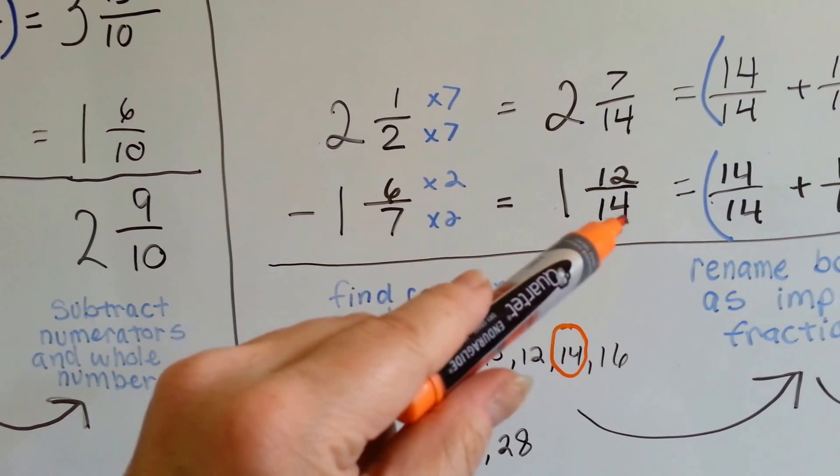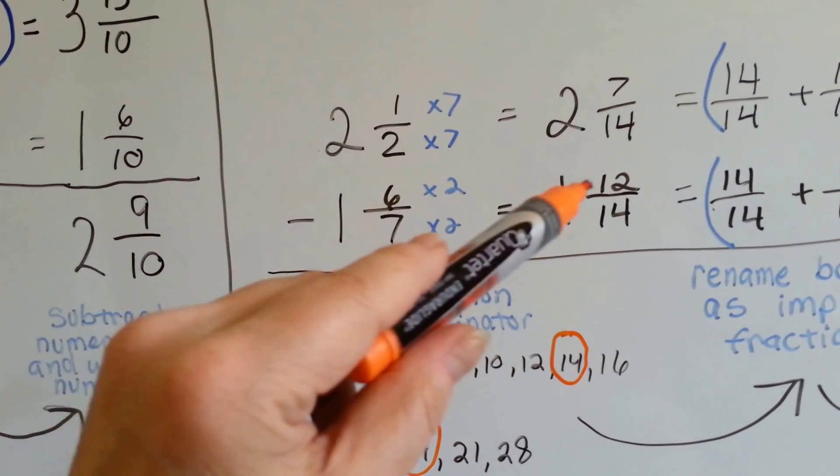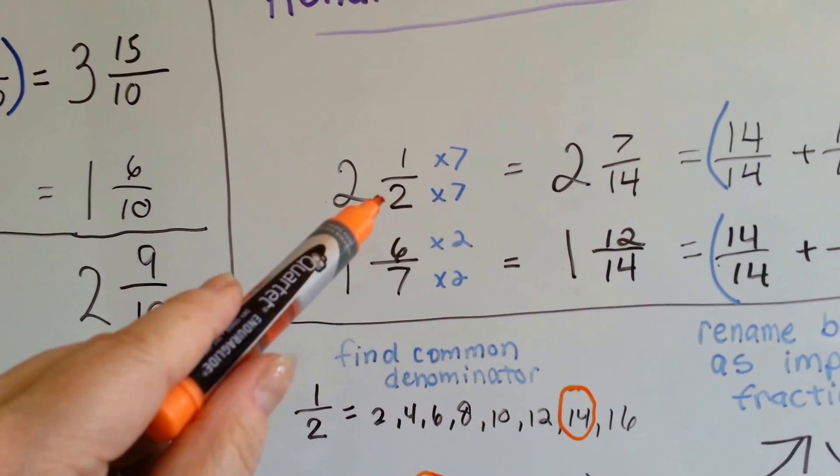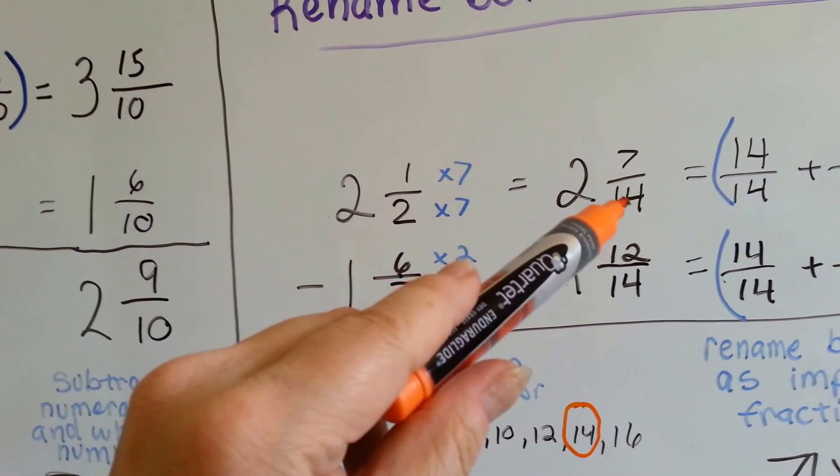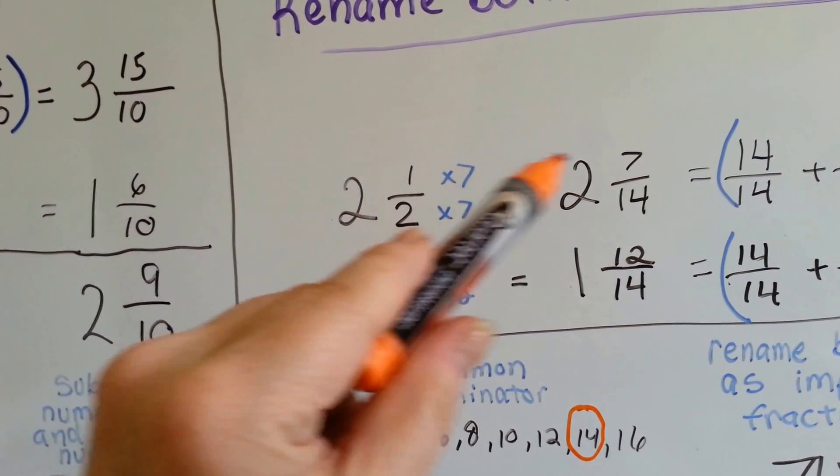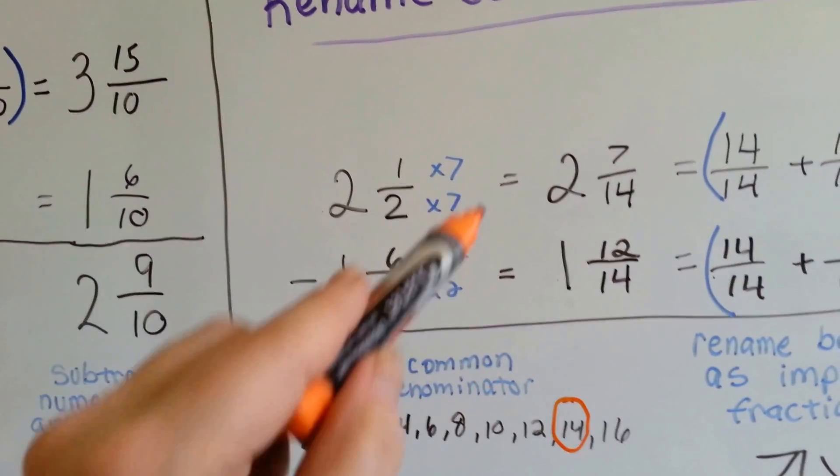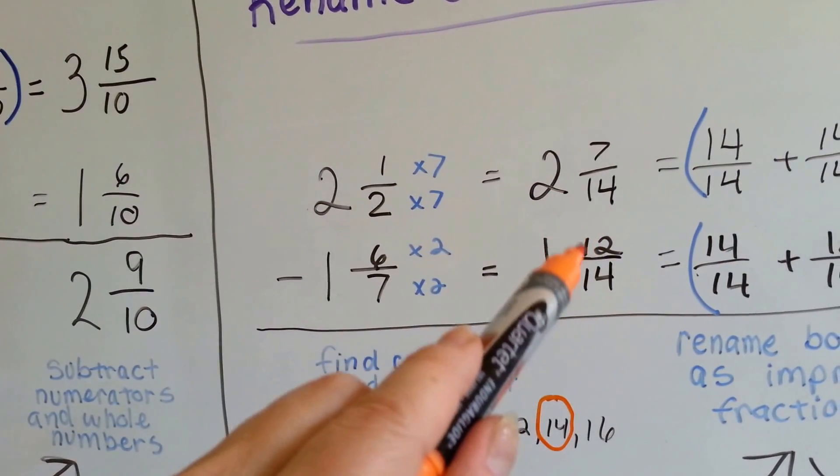7 needs to be multiplied by 2 to become 14. 6 is jealous, he gets multiplied by 2. 2 needs to be multiplied by 7 to become 14. 1 is jealous, it gets 7 also. So now we've got 2 and 7 fourteenths and 1 and 12 fourteenths,